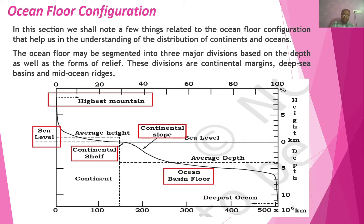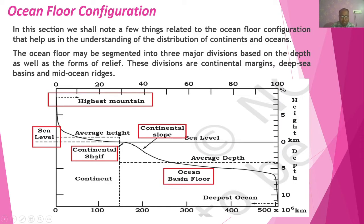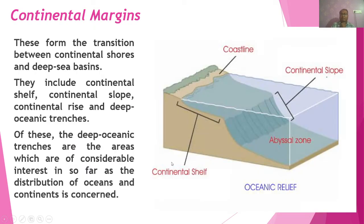In our later classes, we will reveal the relief structures visible inside the ocean. The continental margin forms the transition between the continental shore and the deep sea basin. It includes the continental shelf, continental slope, continental rise, and deep ocean trenches. Beyond that, you will see deep oceanic trenches.